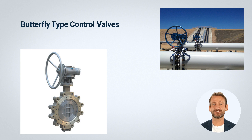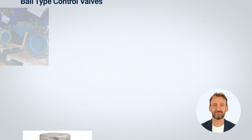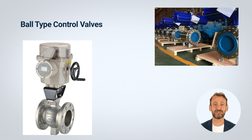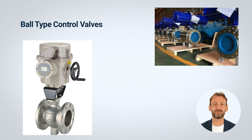Design: ball valves consist of a spherical closure element — the ball — that rotates within a valve body to control flow. The ball has a hole through its center that allows fluid to pass through when aligned with the valve body openings. Ball valves can be made from a variety of materials including stainless steel, brass, or plastic.